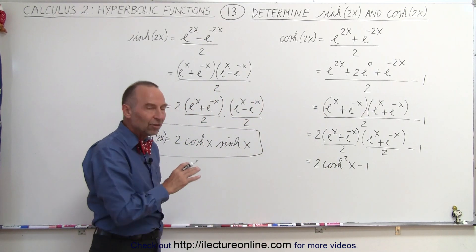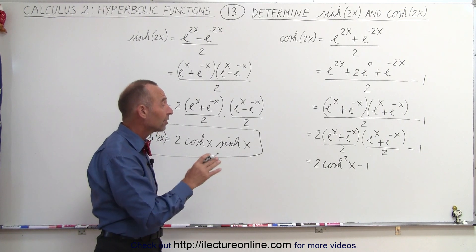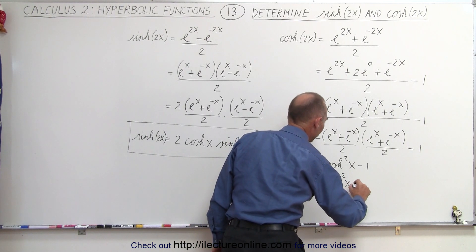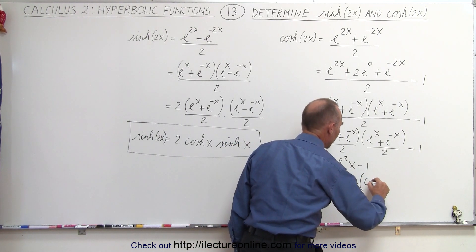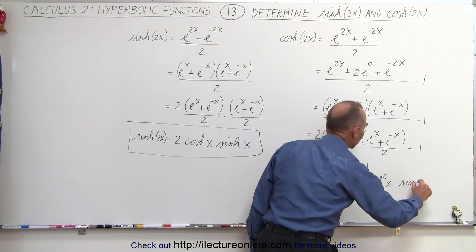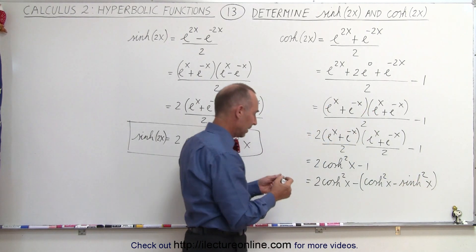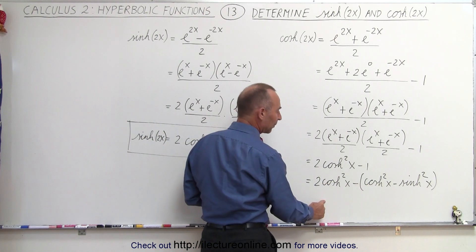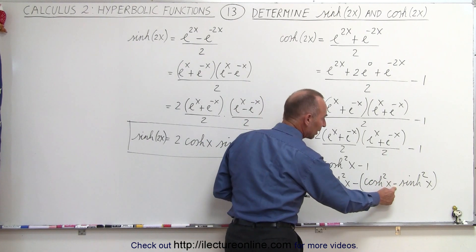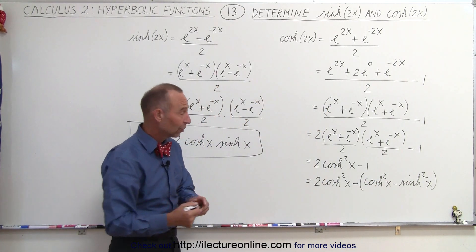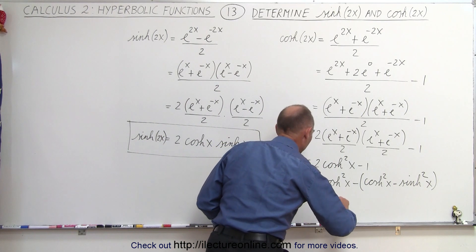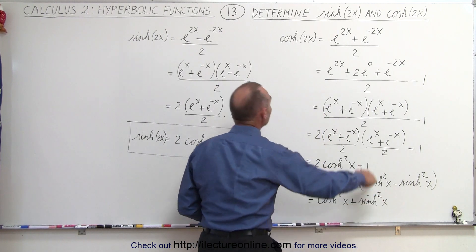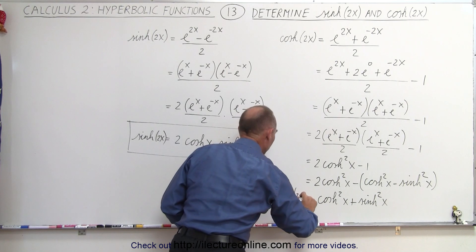We then realize that 1 equals the hyperbolic cosine squared minus the hyperbolic sine squared. So this can be written as 2 times the hyperbolic cosine squared of x minus the quantity hyperbolic cosine squared of x minus hyperbolic sine squared of x. The 2 cosh² and minus cosh² gives us 1 cosh² of x, and minus times minus gives us plus hyperbolic sine squared of x. So the hyperbolic cosine of 2x equals the hyperbolic cosine squared of x plus the hyperbolic sine squared of x.